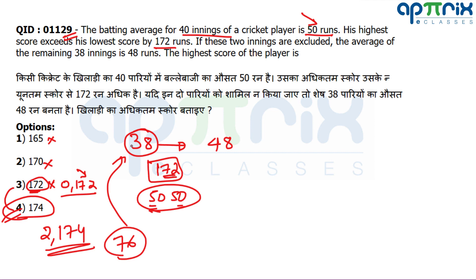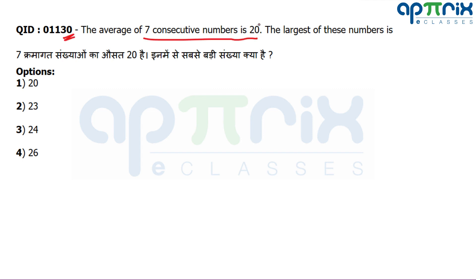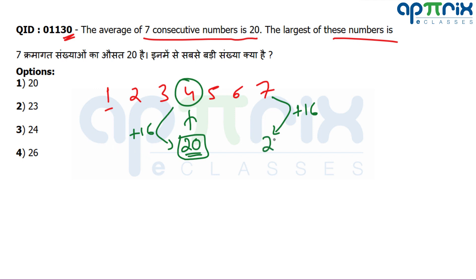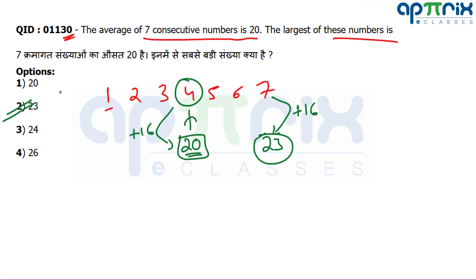Question 30: Seven consecutive numbers have an average of 20. What is the largest? For any odd count of consecutive numbers, the middle number equals the average. Starting with 1–7, the middle number 4 is the average. Since the average here is 20, the shift is +16. Add 16 to each number — the largest becomes 7 + 16 = 23. So 23 is the right answer.